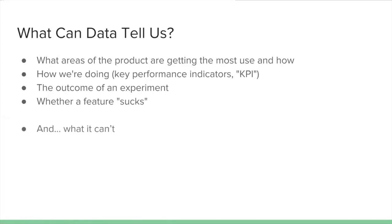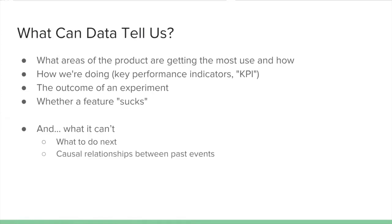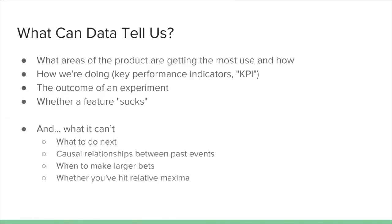There are also a lot of things data can't tell us. It can't tell you what to do next — data is not 100% predictive and it's not inventive. Your database isn't going to research competitors and figure out what you need to do to be useful; that's still product manager intuition. It can't 100% prove causal relationships between past events, as we discussed. It can't tell you when to make larger bets, and it can't tell you whether you've hit a relative maximum — whether you've optimized an area so completely that you need to rethink the entire thing. You just have to take that on gut.